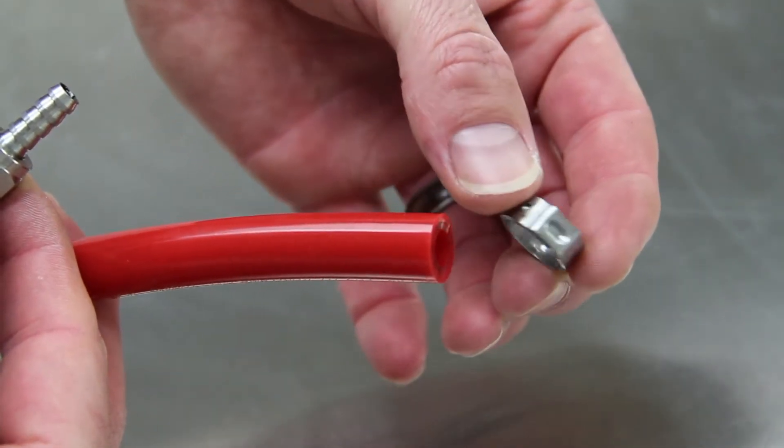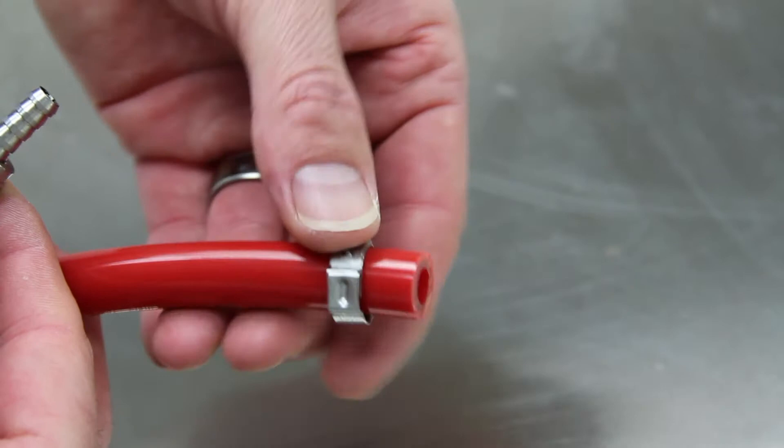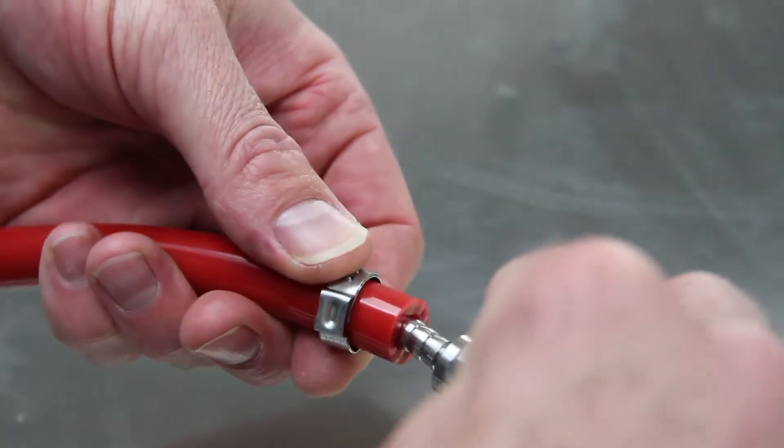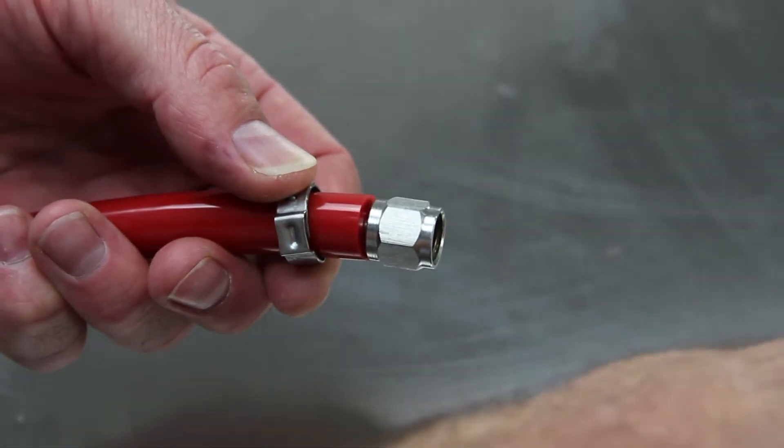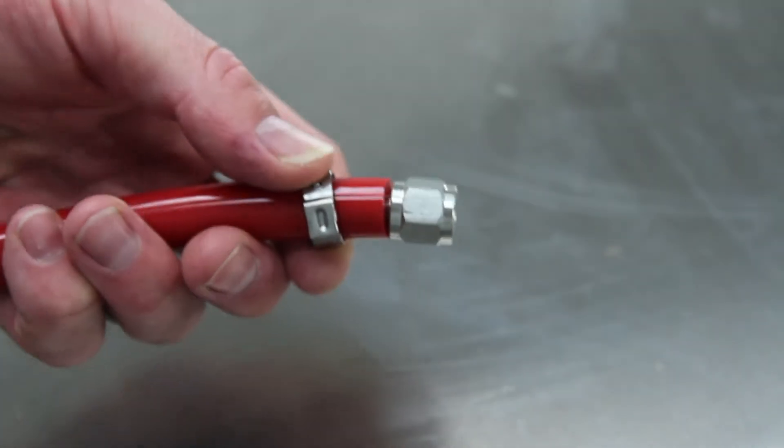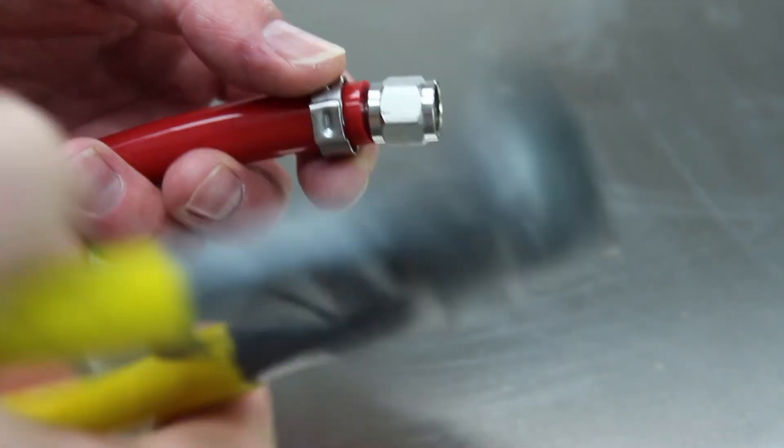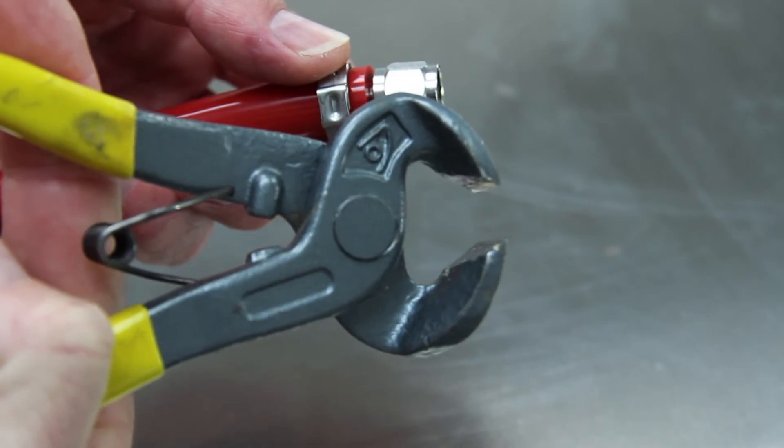Selecting the correct size of the Oetiker clamp is very important. Oetiker clamps come in a variety of sizes and only clamp to a certain diameter. These are the preferred clamps in the beverage industry due to their evenness and durability.